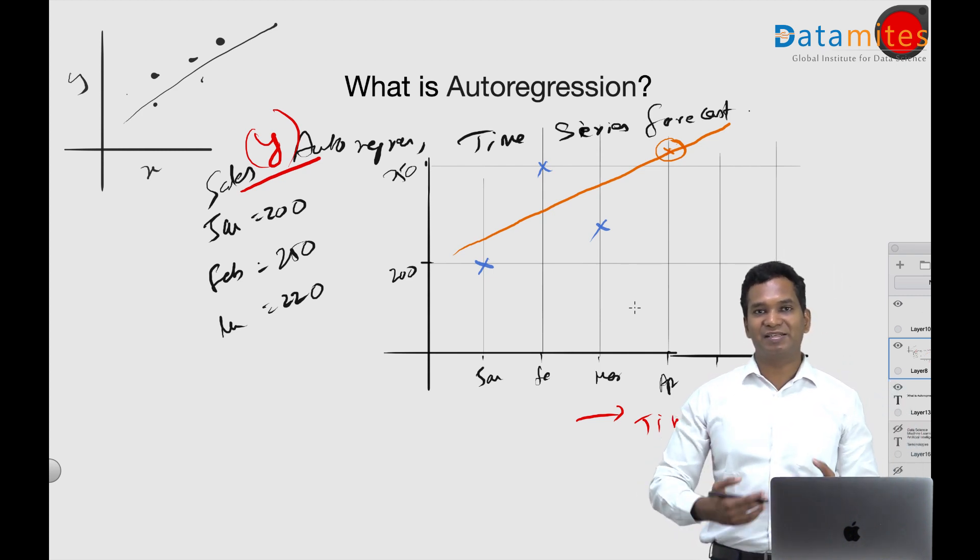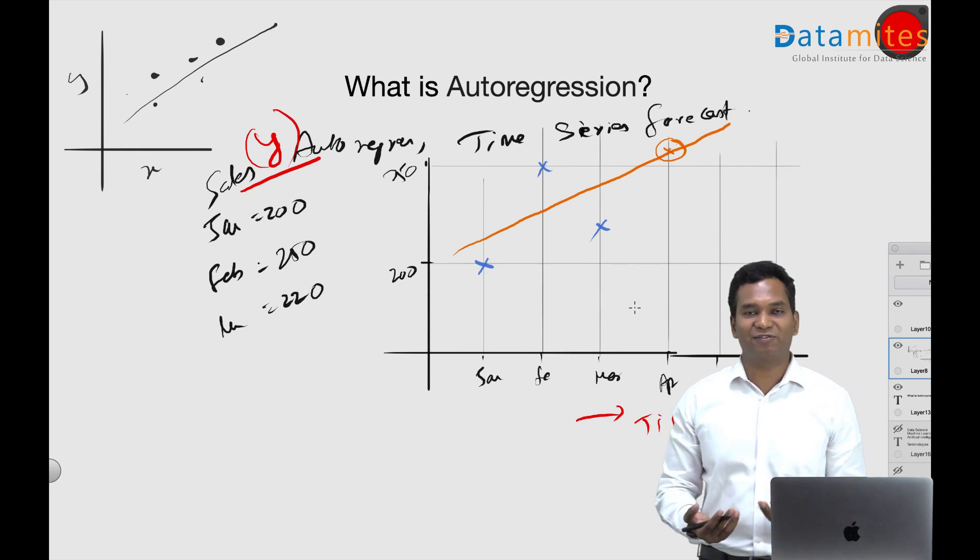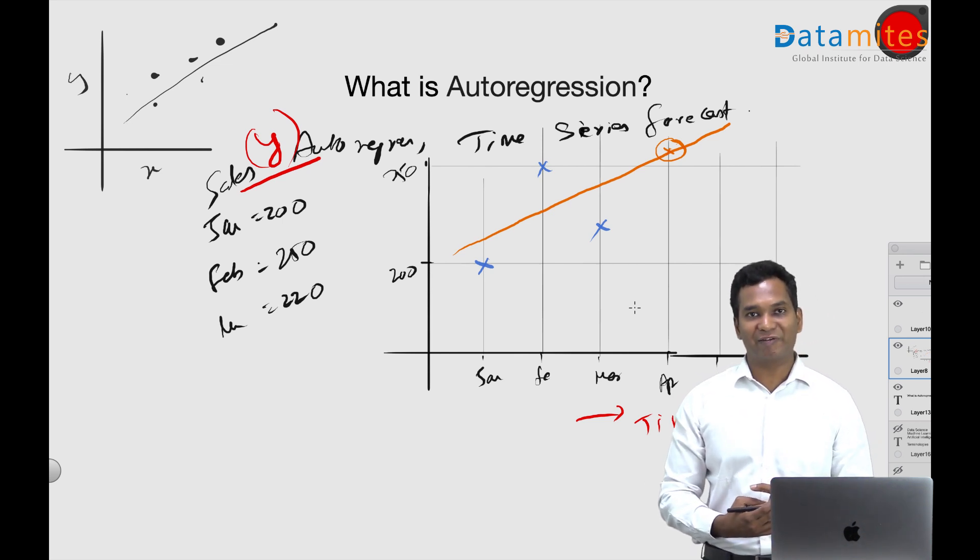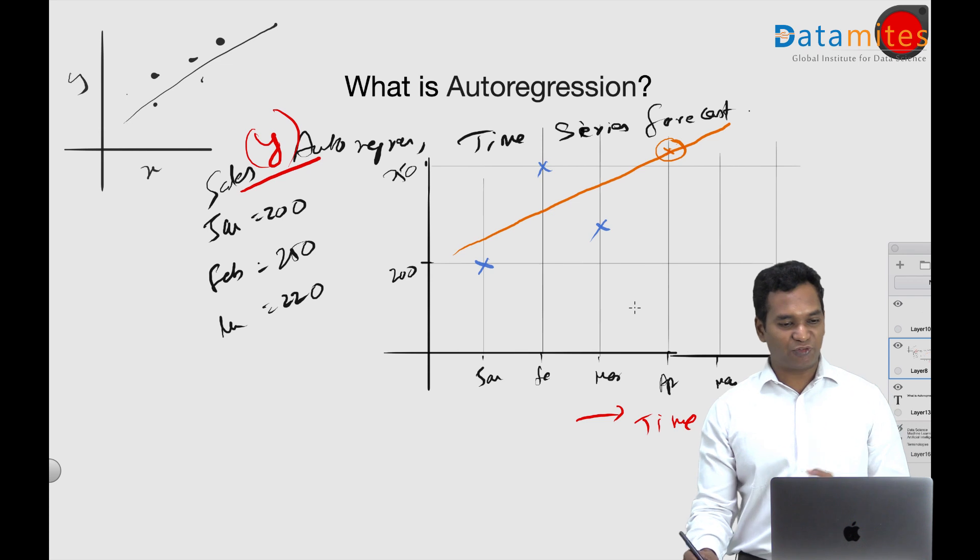When you say autobiography, it's a story about yourself, right? So anything auto means it's yourself. So here we are regressing y with y itself. We call it as autoregression.